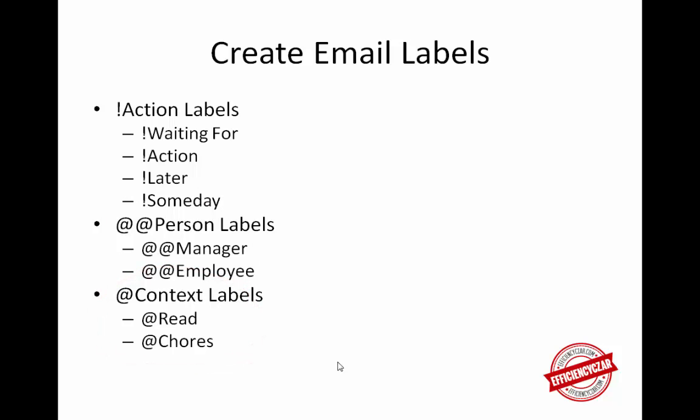If you need to wait for an answer, you're going to label it with 'waiting for' because that's an action — you're waiting for something to happen. The other one is 'action,' which means the email is going to take you two minutes or more to answer, so you're going to put it into a holding folder called action. Once you get through emails that take two minutes or less, you'll hit your action folder and go through those.